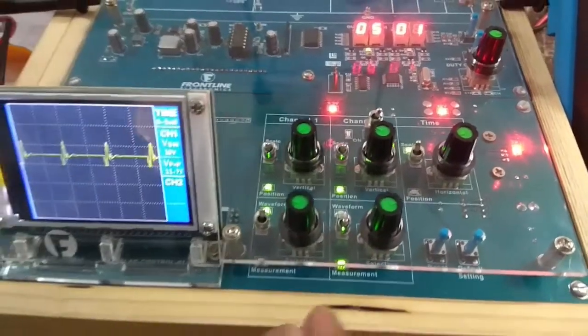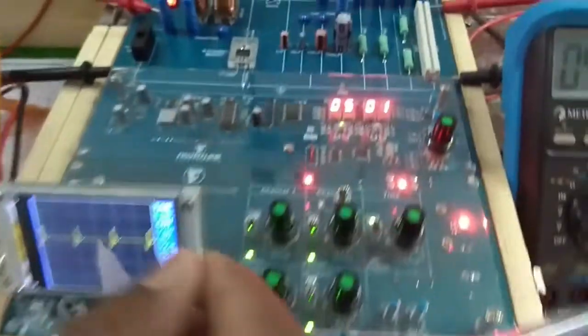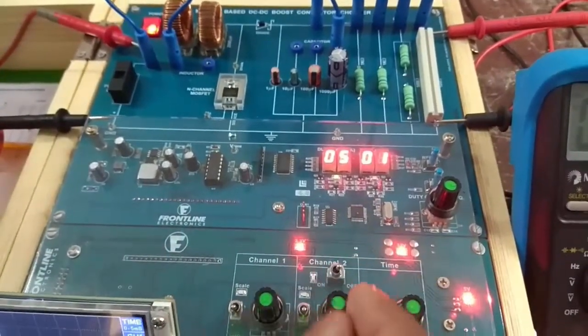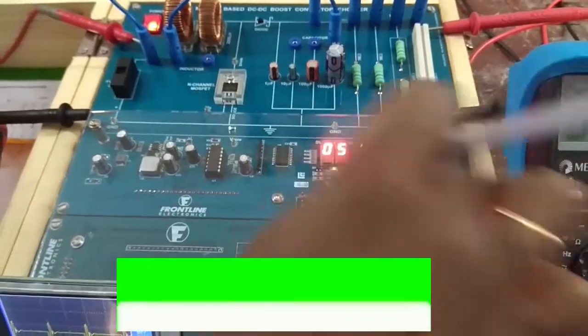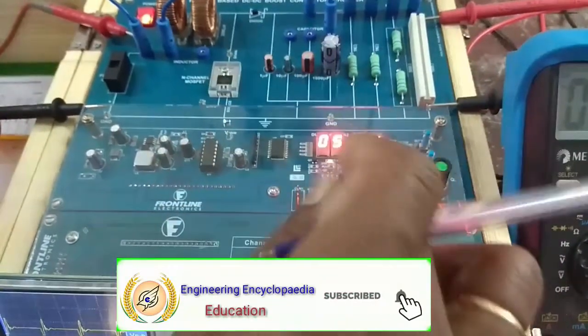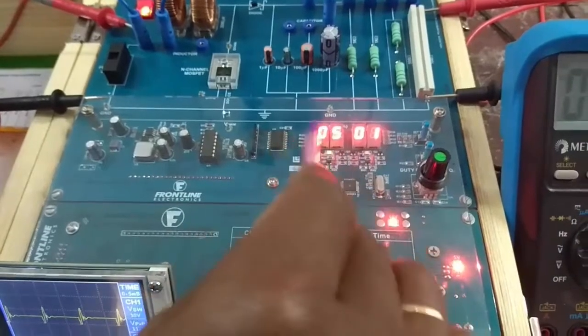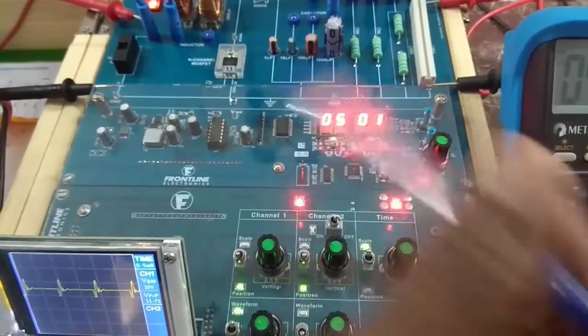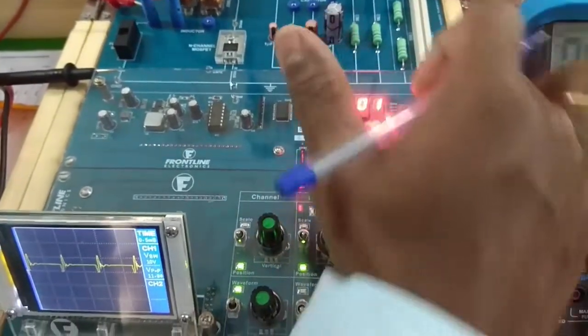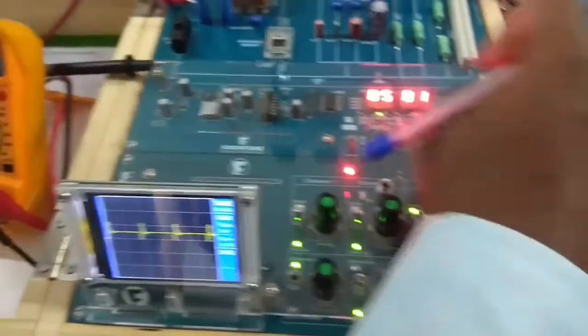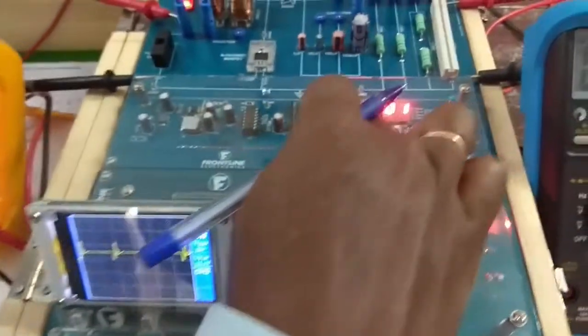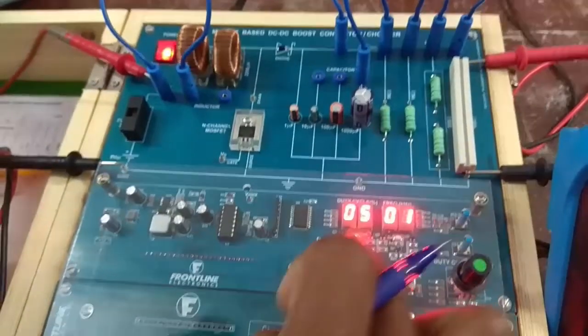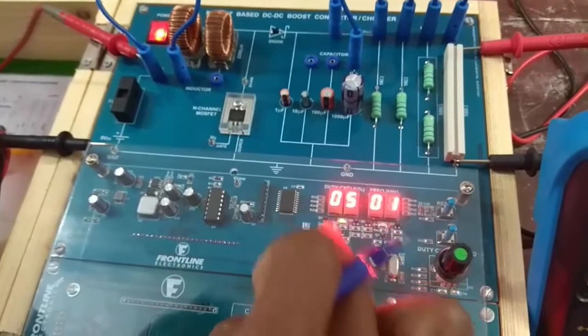For the MOSFET, we need to supply a gate pulse. The gate pulse can be supplied at various frequencies by varying the duty cycle using this setup. We have duty cycle calculation in percentage and frequency. The duty cycle and frequency can be modified. First, I'll reset it. The indication of this LED represents which frequency or duty cycle is going to vary.